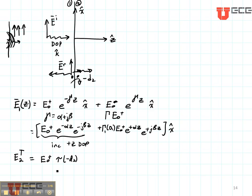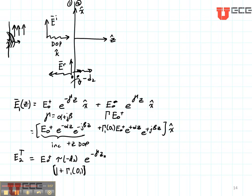The transmission coefficient at minus D two is one plus the reflection coefficient at O one. Then we need to figure out which way this wave is going — it's going in the positive Z direction, so we write that as E to the minus gamma Z. The electric field is polarized in the positive X direction.